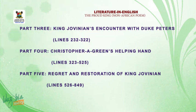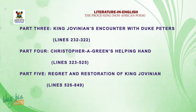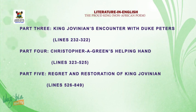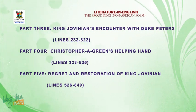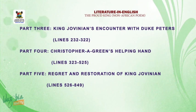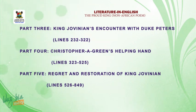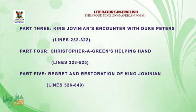Part four covers lines 323 to 525, titled Christopher Green's Happy Hand — a happy hand given to King Jovnian to return to his palace in a naked form. When he reached the palace, he met another person ruling in his place. His disgrace was complete: all his chamberlains, lords, servants, soldiers, and even his queen denied him and called him a mad person. The king offered to accommodate Jovnian only as a servant, which Jovnian rejected, and he was driven out of the palace.